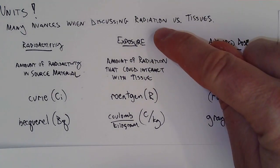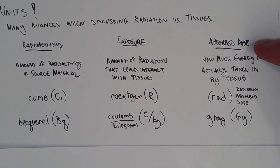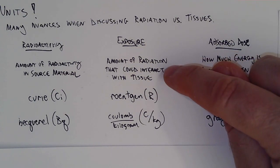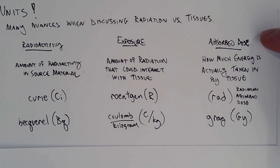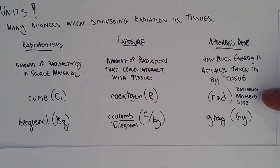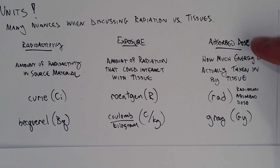Next is absorbed dose. Exposure is how much actually interacts with your body, but not all of what you're exposed to will actually deposit energy into your cells. The absorbed dose tells us how much is taken in by the tissue. The conventional unit is the rad — which is actually an abbreviation for Radiation Absorbed Dose — and Grays are the SI unit. They measure the same thing on different scales.